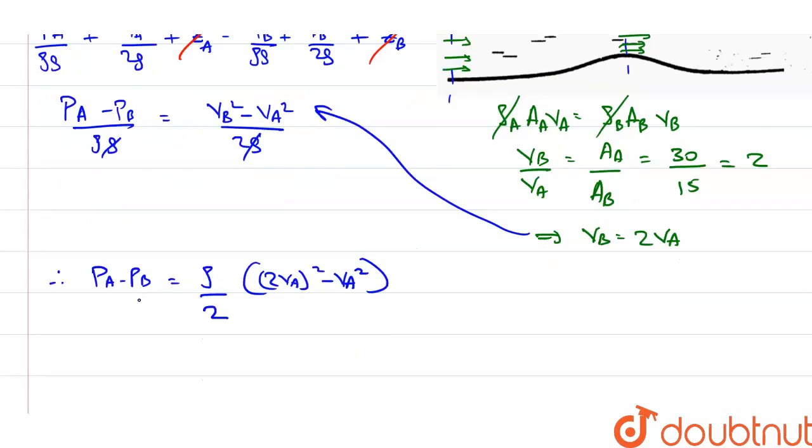Now, the difference between P_A and P_B is given as 600 N per meter square. The density of water is 1000 kg per meter cube divided by 2, and the value in the bracket becomes 3 V_A square. This becomes 500, this becomes 200.